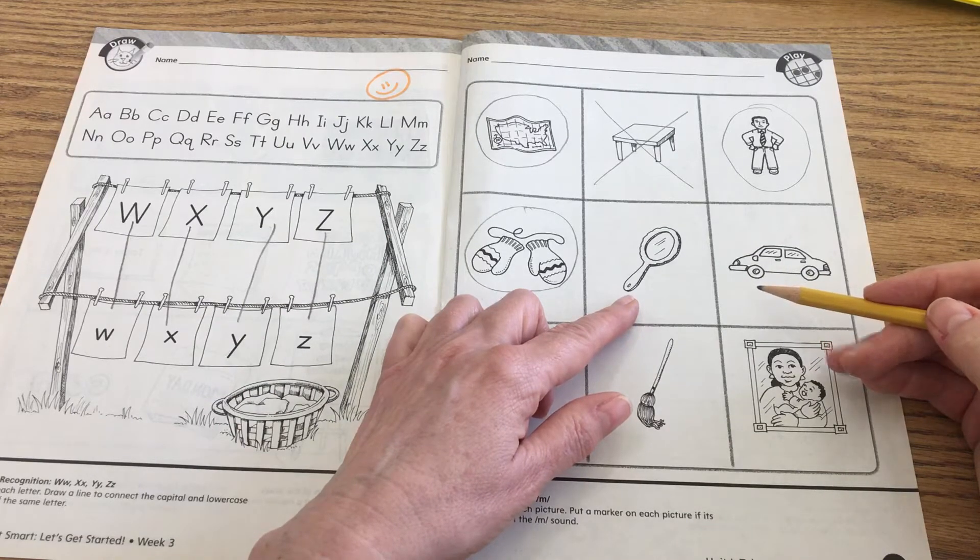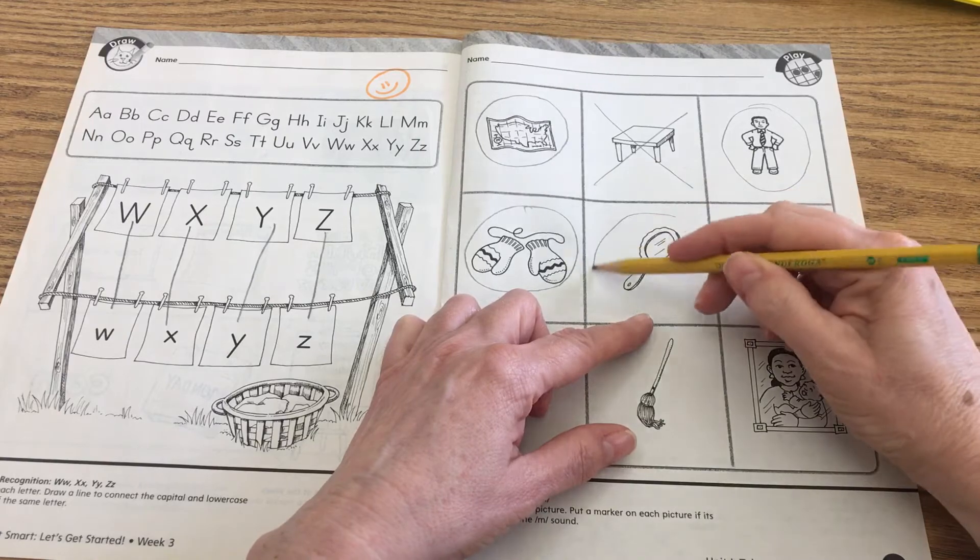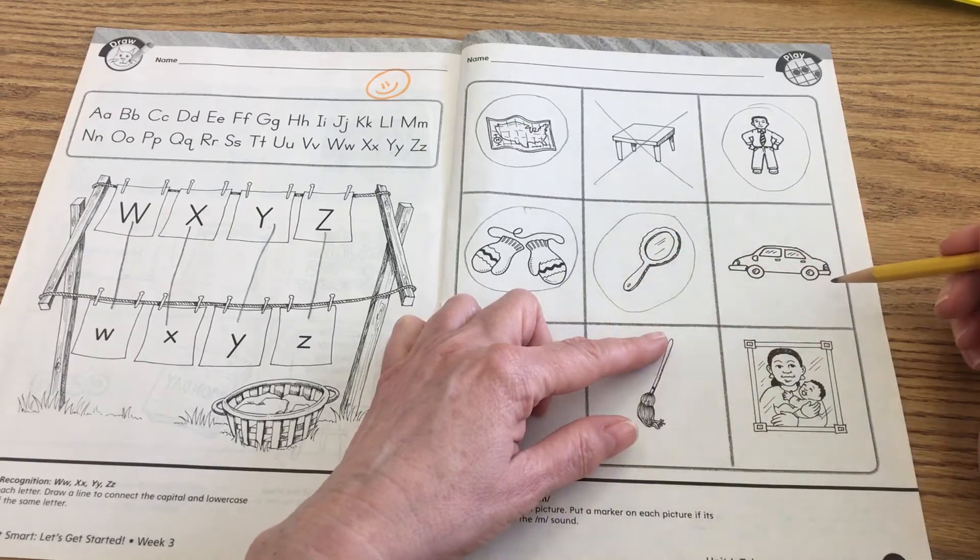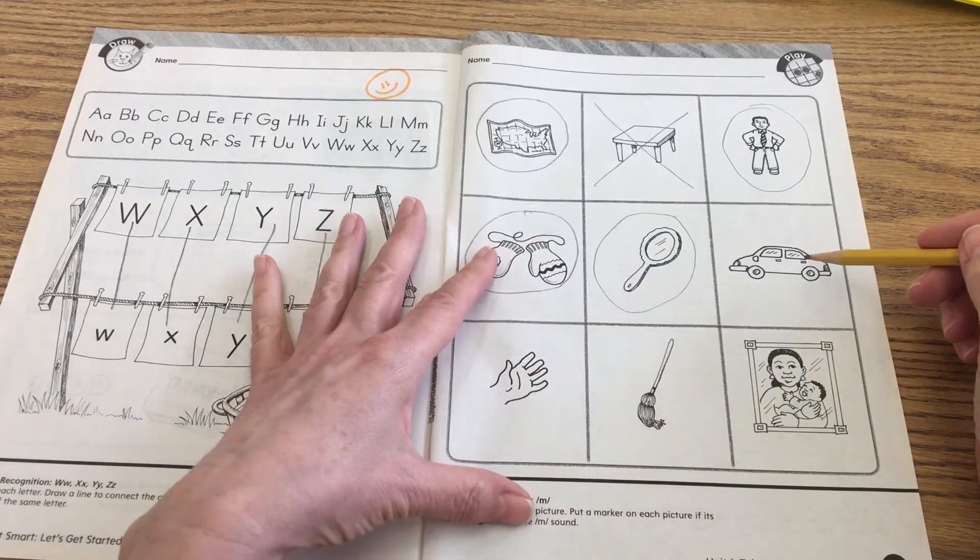Echo mirror. Mirror. Mirror. Monkey. Those both begin with the mmm sound, where you press your lips together to make the sound.